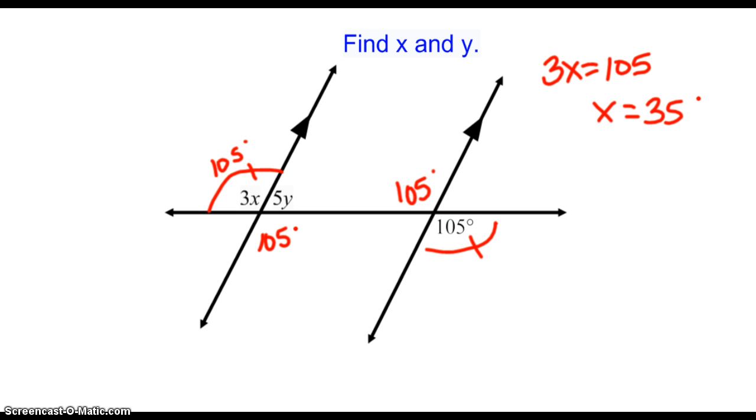Now, to find y, we already marked some of the angles that we know. 5y and this 105 degree angle that was originally given do not share a relationship directly. So moving the angle measures, here we know we have vertical. So this 5y and this 105 are consecutive interior angles, or you could also look at this 5y and this 105 as being a linear pair. Either way, we know that those angles are supplementary. So we know that 5y plus 105 equals 180. So there's our second equation. Solving that, you should get y is 15.